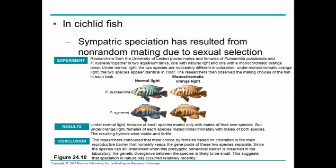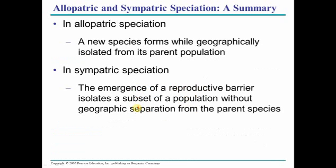Here's an example of mate selection, or sexual selection. You have two different types of fish. Under normal light, when you put them in the same environment, they don't mate with each other because visually they look different. But if you put them under monochromatic orange light, they'll mate with each other — they don't realize they're a different species. So this is a prezygotic barrier that is morphological or phenotypical: they look different, so they don't mate with one another.